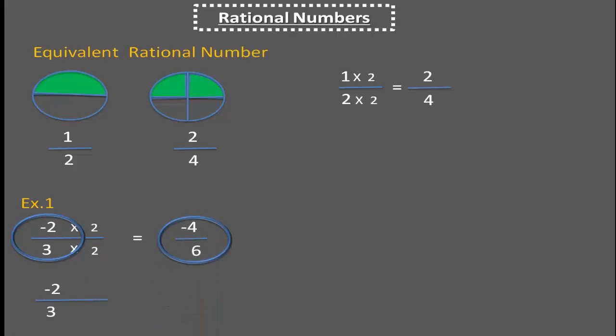From minus 2 by 3, multiplying minus 5 in numerator and denominator, we get 10 by minus 15.